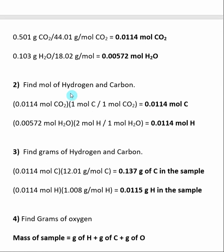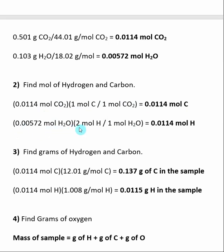Now we want to find the number of moles of hydrogen and carbon, by looking at the ratios inside the molecular formula of each corresponding compound. Inside CO2, for every one mole of CO2 we have one mole of carbon — it's a 1 to 1 mole ratio — so we have 0.0114 moles of carbon. With H2O, there are two moles of hydrogen for every one mole of H2O, so we multiply our moles of H2O by two to get the number of moles of H. We will need these moles of carbon and hydrogen later in the problem.